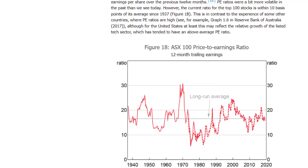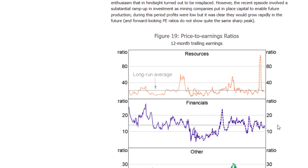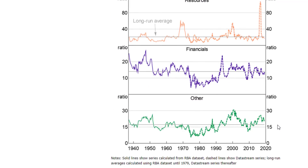Over the last century, average PE ratios have fluctuated a fair bit. The PE ratio of the broad Australian share market has for the most part fluctuated between 10 and 20, with a long-term average of around 15. When share markets and the wider economy are doing well, investors tend to be more confident about the future earnings potential of companies, causing PE ratios to rise.